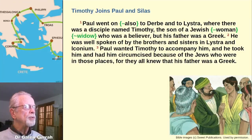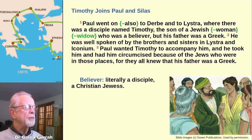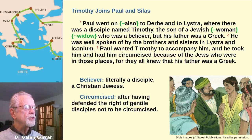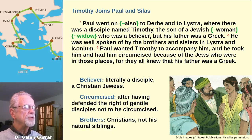In your Bible study group, have someone read aloud verses 1 through 3. You may have to explain that the term 'believer' in the original text is literally 'a disciple.' In this case, the disciple or follower of Jesus is a Christian Jewess. This incident took place shortly after the council in Jerusalem had defended the right of Gentile disciples not to be circumcised. The term 'brothers' or 'brothers and sisters' refers to Christians, not to someone's natural siblings.